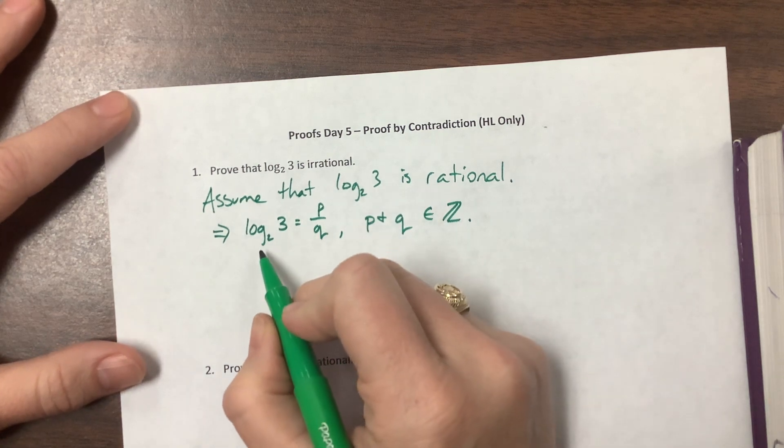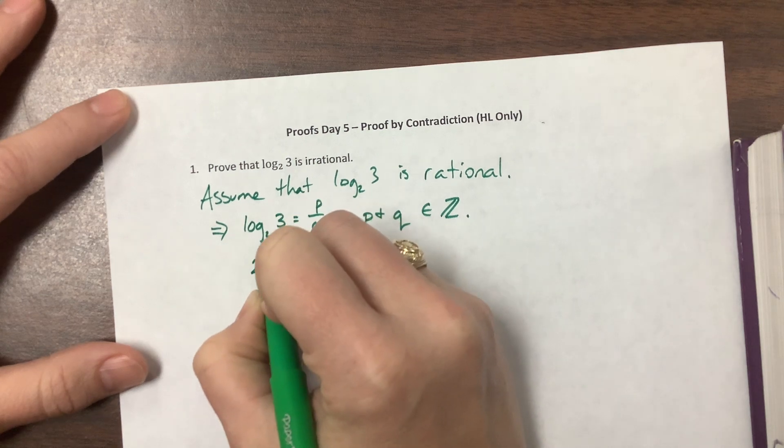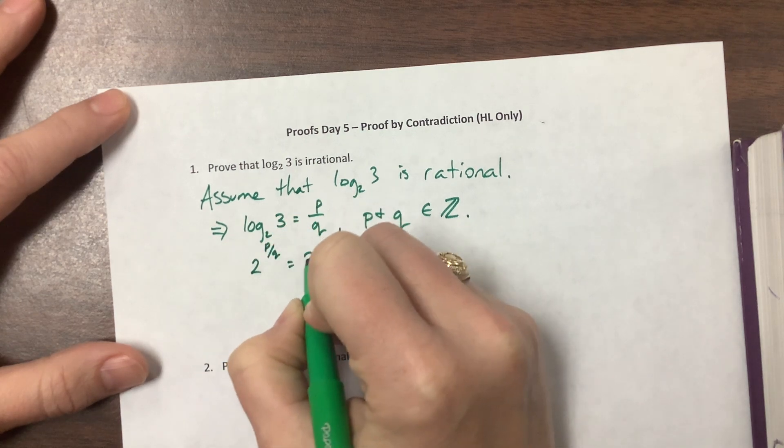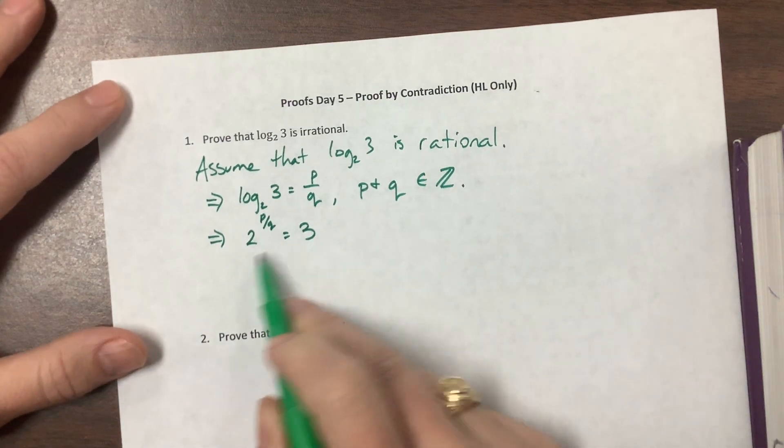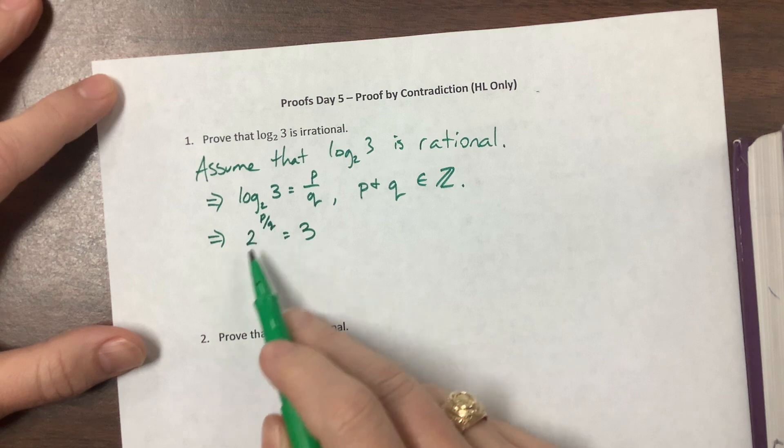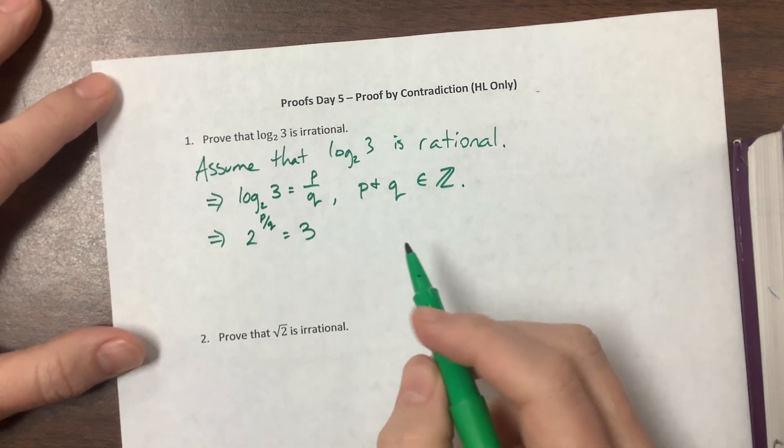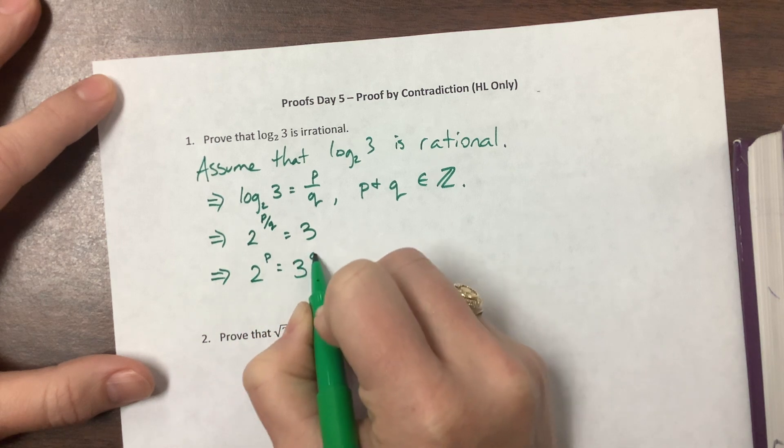Then if that's the case, we can do our log properties. Then we have 2 to the p over q would be equal to 3. That would imply that. And now notice I can raise both sides to the q. So this would imply that 2 to the p is equal to 3 to the q.